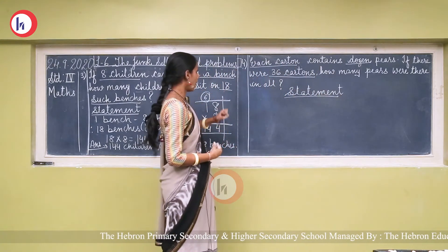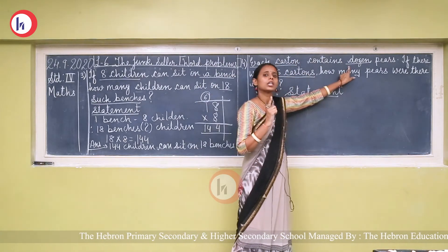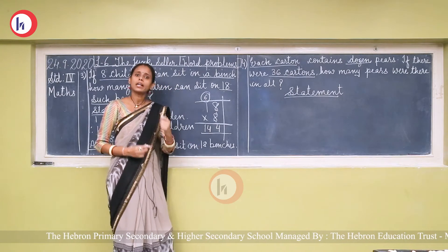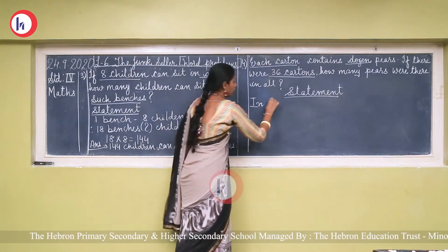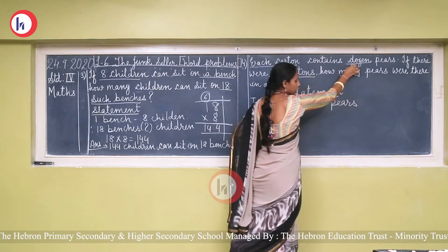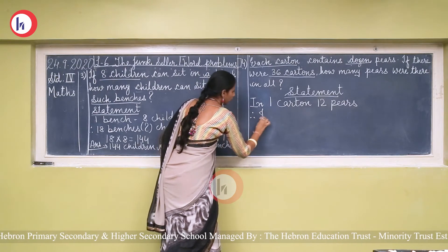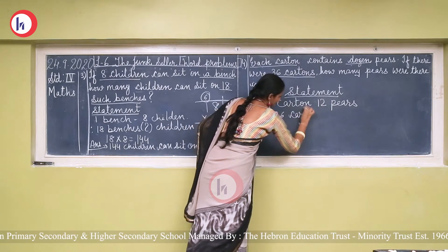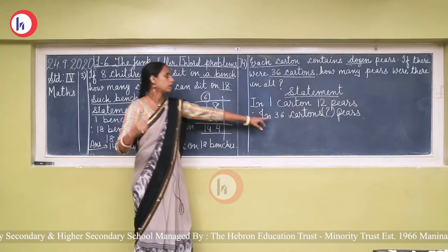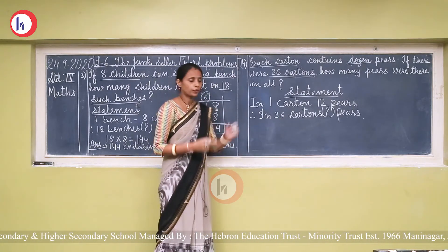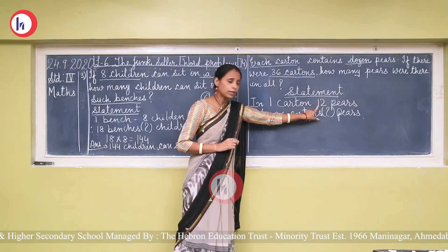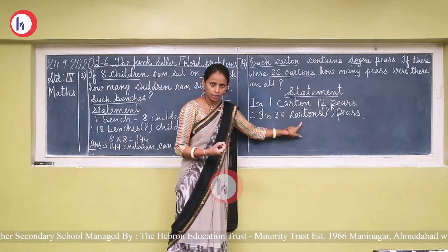Statement: In one carton, 12 pairs. In 36 cartons, how many pairs? The repeating word is 'carton', so we start with carton. Value of one carton is given (12 pairs), and value of more than one — 36 cartons — is being asked. So we do multiplication.